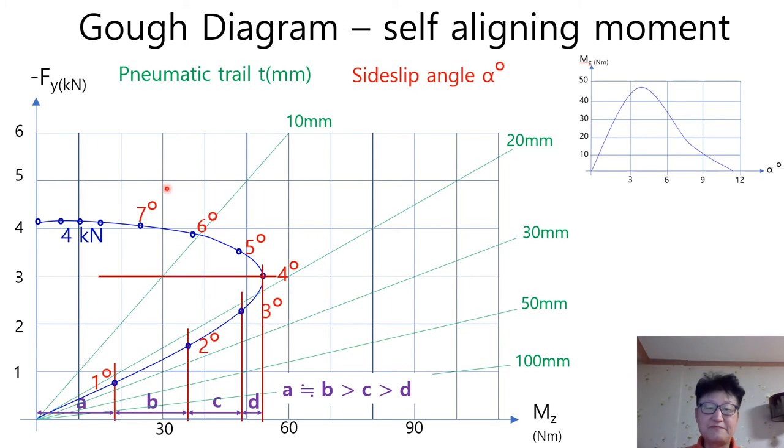You can find the self-aligning moment by drawing the vertical line at the small circle. It does not linearly change in proportion to side-slip angle. So, the increment of self-aligning moment is continuously decreases until its maximum value. So, A is greater than B, B is greater than C, like this. You can find this explanation in the 19th video.